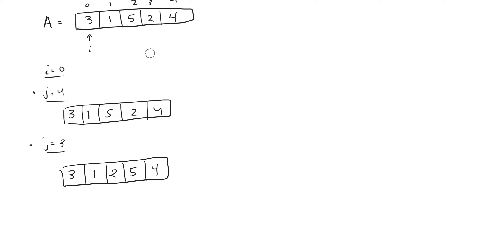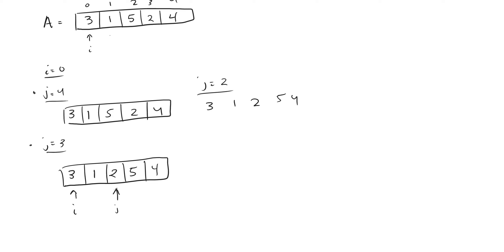Then we iterate down and get to where A[J] is equal to two. I is still in place. We check: is A[J] less than A[J-1]? That is not the case — this is already in sorted order, so we don't do anything. When J equals two, we just keep what we had at J equals three.